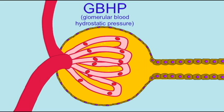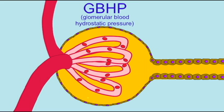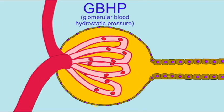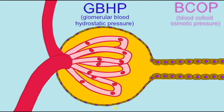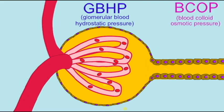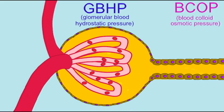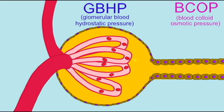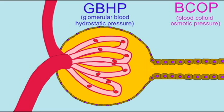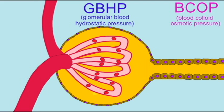This is the GBHP, or glomerular blood hydrostatic pressure. There are then two resisting forces: the BCOP, the blood colloid osmotic pressure, and the CHP, the capsular hydrostatic pressure.